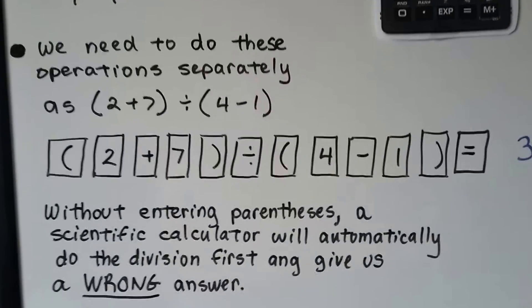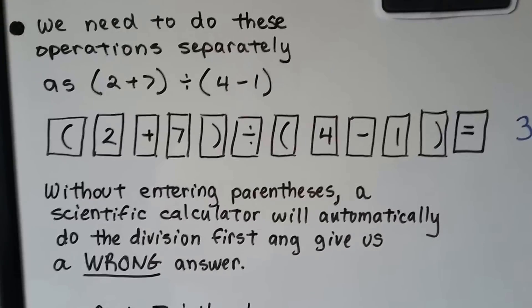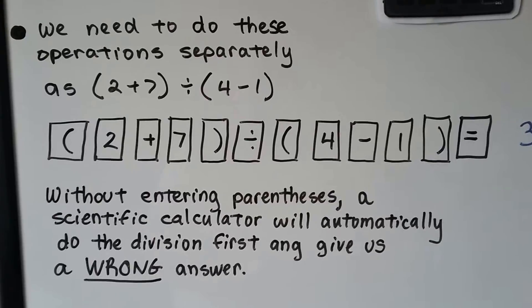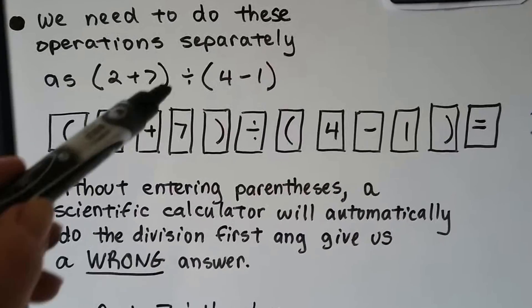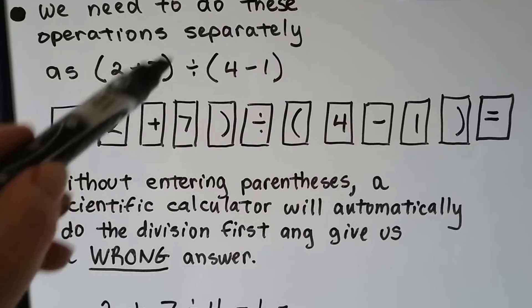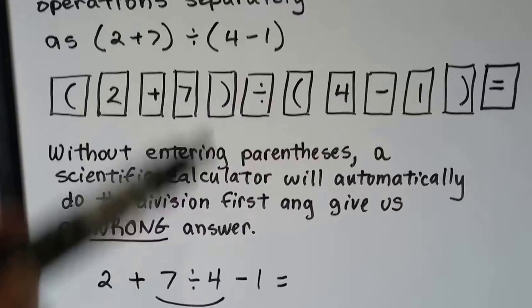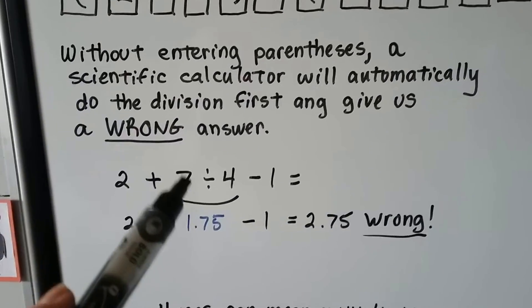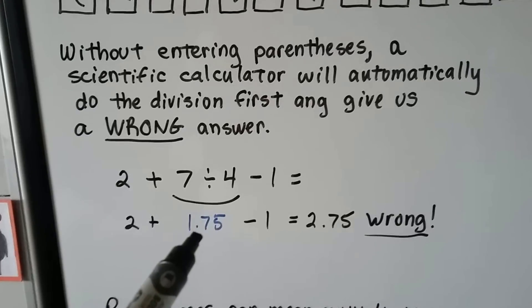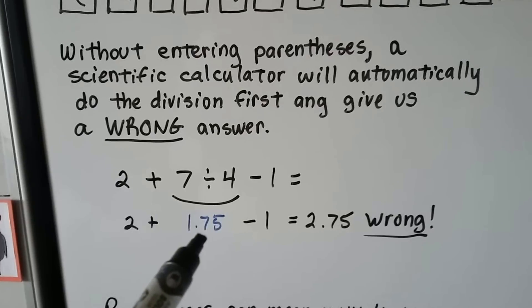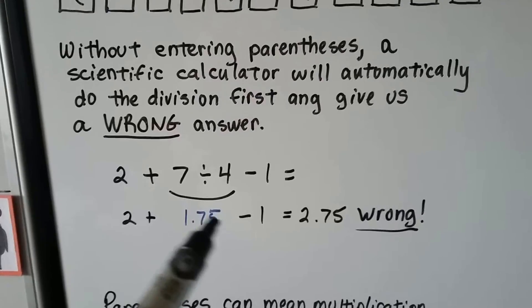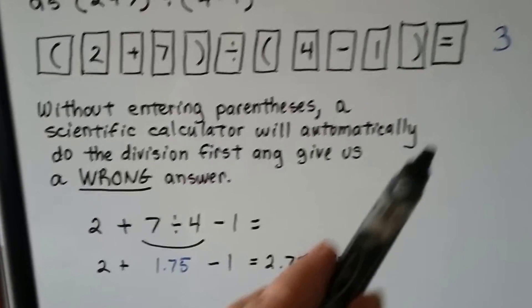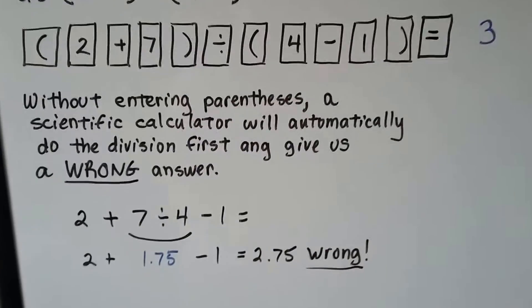Without entering parentheses, a scientific calculator will automatically do the division first and give us a wrong answer — because it follows the order of operations and does division first. It would do 7 divided by 4 and get 1.75, then add the 2 and subtract the 1 to get 2.75, which is wrong. The answer is 3.